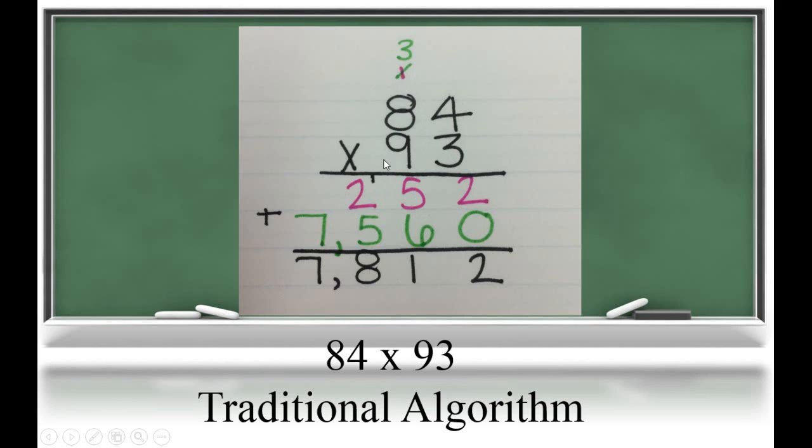Now let's move to multiply by this 9. But we know that this 9 is not 9, it's 9 tens. And any time we multiply by a ten, we have a 0 in the ones place because there are no ones. 9 tens times 4 ones is 36 tens, so we can regroup 6 tens and 3 hundreds. 9 tens times 8 tens is 72 hundreds, plus the 3 hundreds is 75 hundreds, or 5 hundreds and 7 thousands. Add all this up to get a product of 7,812.